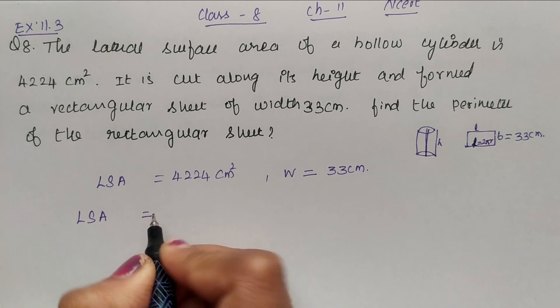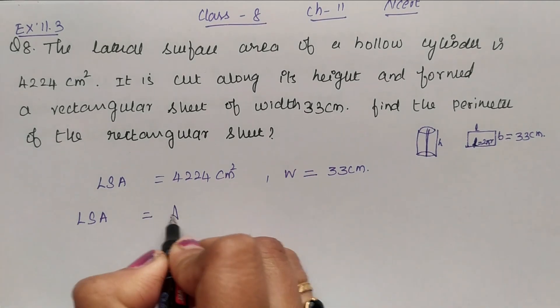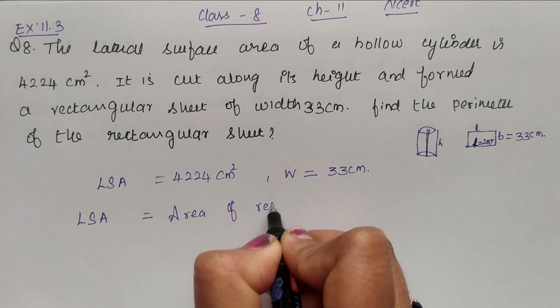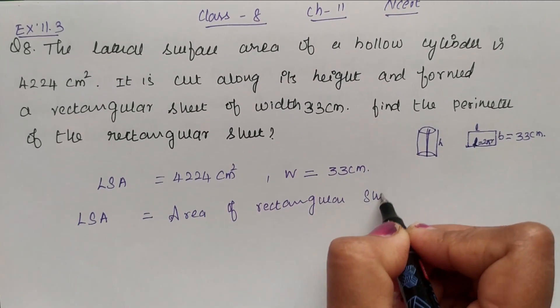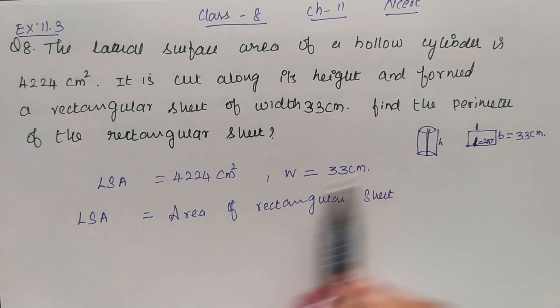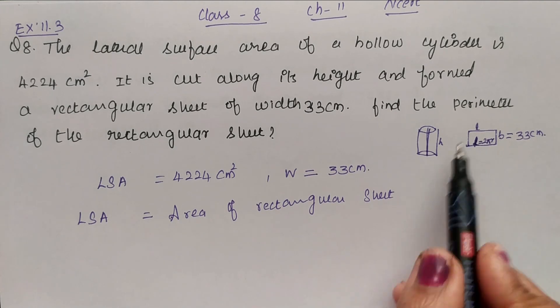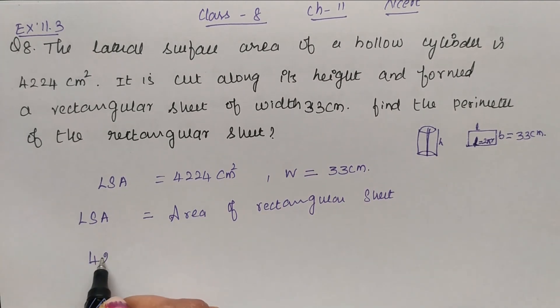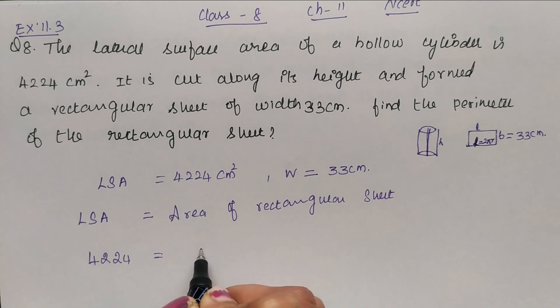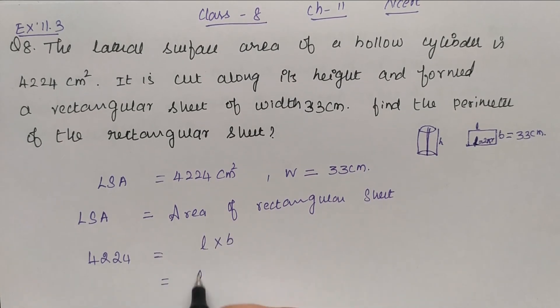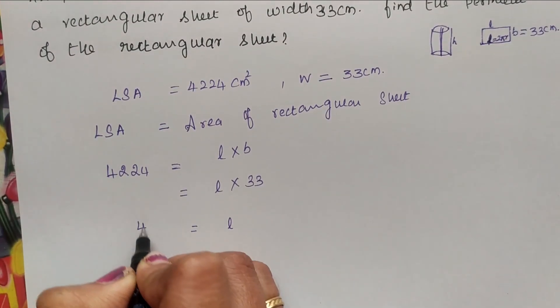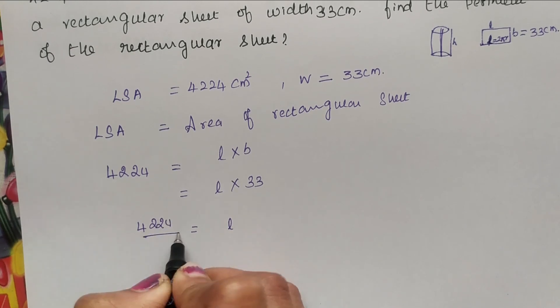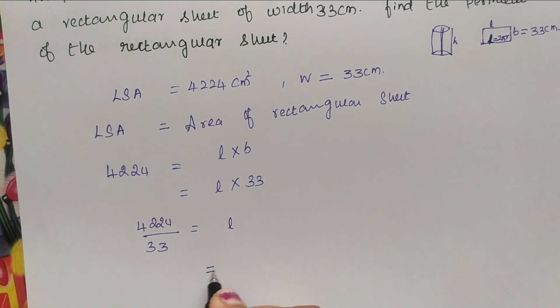Lateral surface area of a cylinder is equal to area of the rectangular sheet. So lateral surface area is 4224 and the area of a rectangular sheet is L into B. Breadth is 33 centimeter. Now we can find L. L equal to 4224 by 33. So L equal to 128 centimeter.